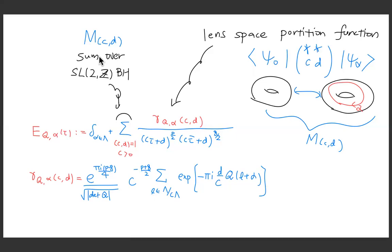In three-dimensional gravity you cannot form black holes by evaporation or by collapse of matter. You can put black holes by hand — they can be there or not. In higher-dimensional gravity, you would automatically have to sum over topologies because black holes are produced dynamically. Here in three dimensions you have a choice. When you make the choice to sum over topologies — which is a better analog to what you would do in higher dimensions — it seems that kind of like global symmetry disappears.